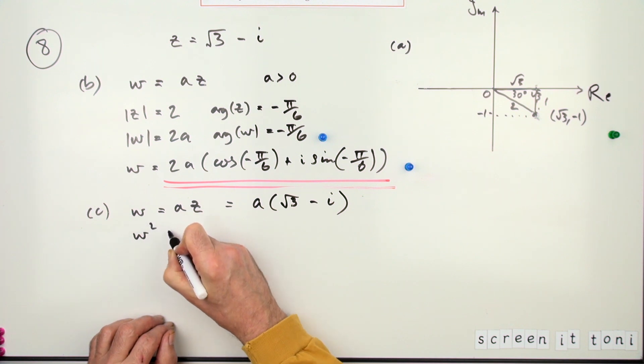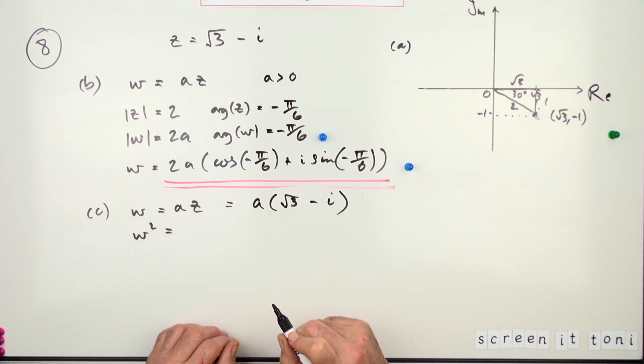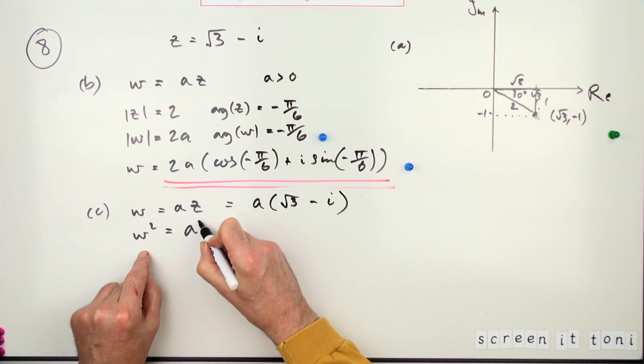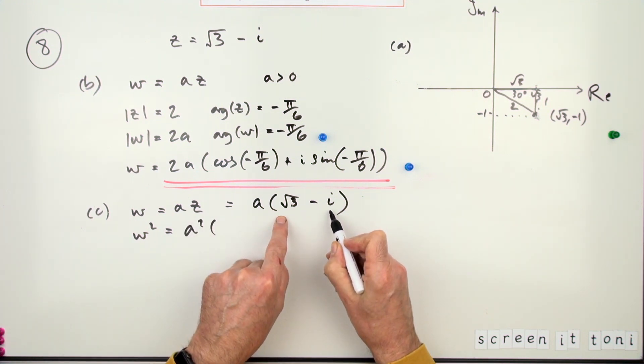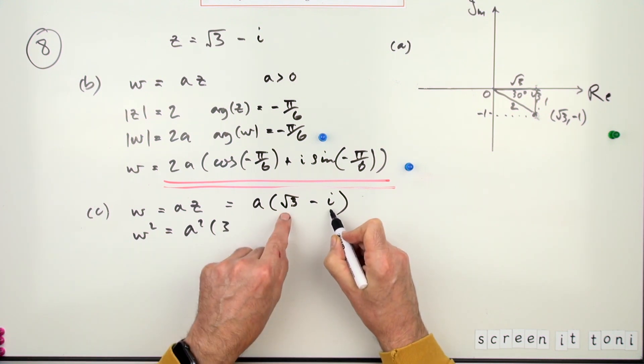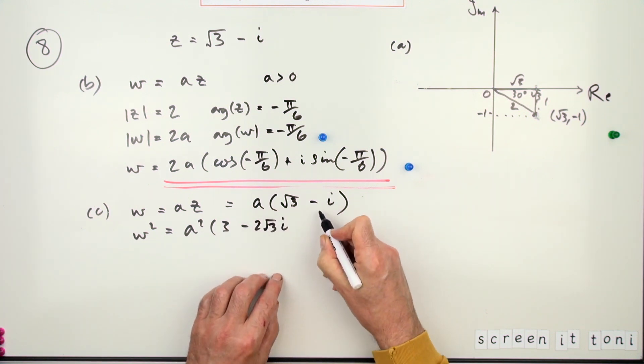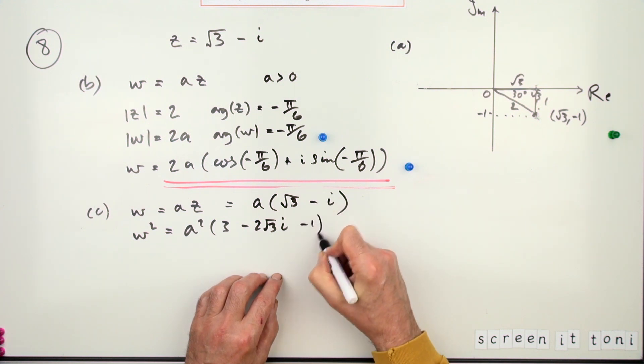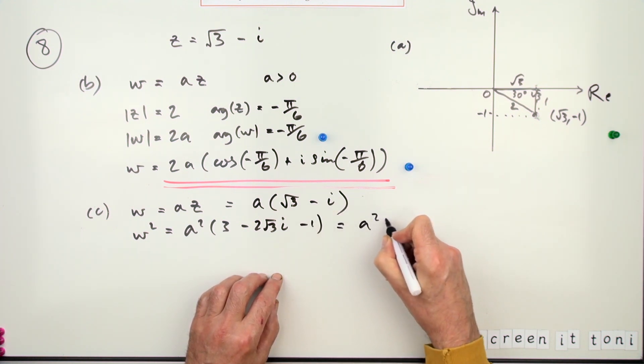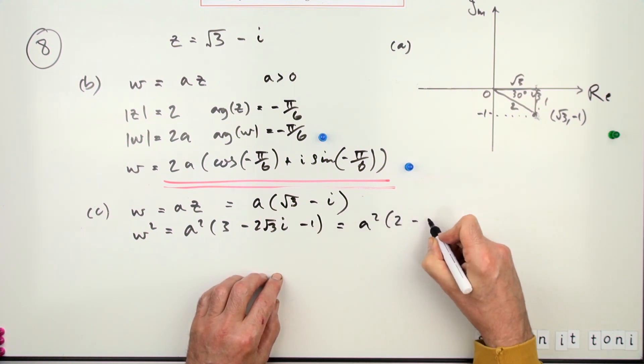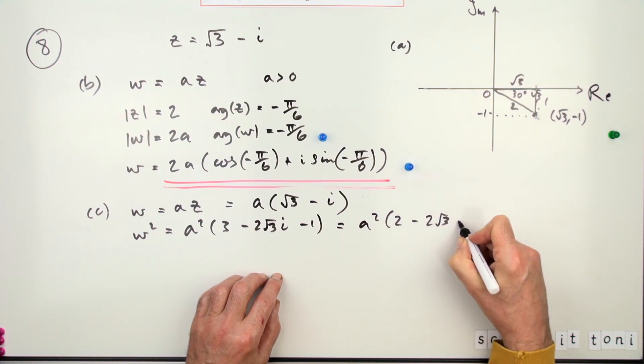Easier than that would just be to work up through the squares, because it's a power of two—power 8. So w² would just be a² times... then square this. So that's square the first, which is just 3; twice the product, that's −2√3·i; square the last, which should be plus one, but in this case because it's an i it'll be minus one. So that means it becomes a²·(2 − 2√3·i).